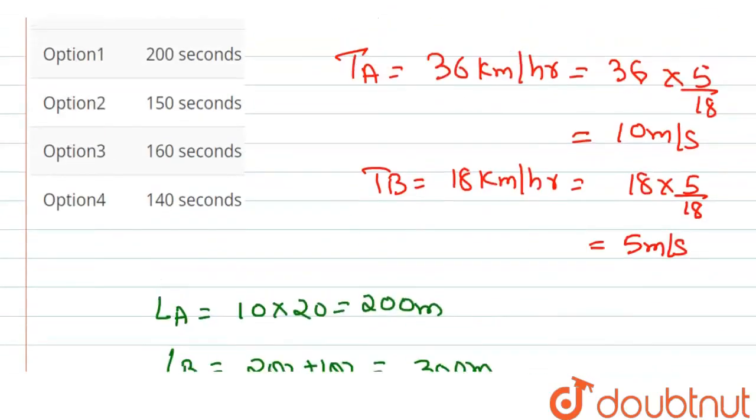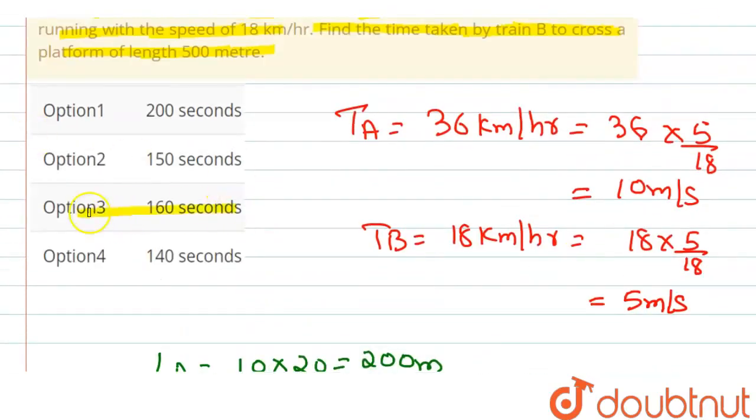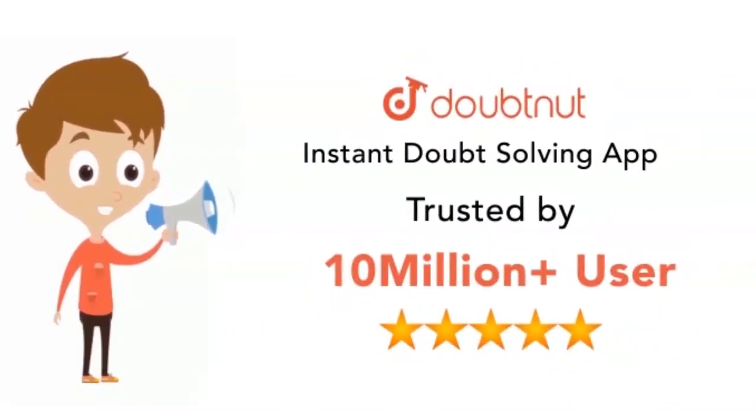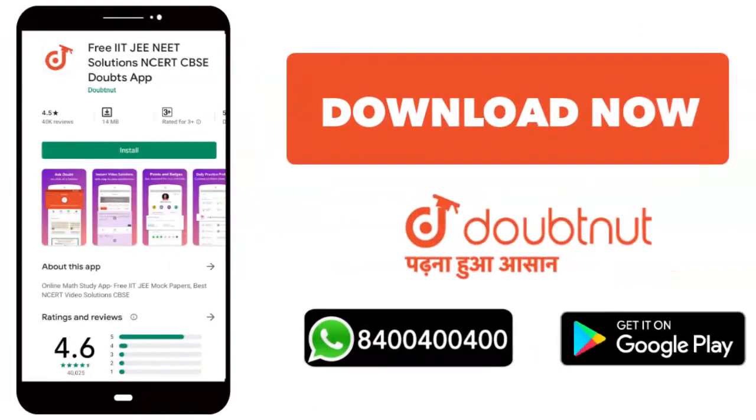Option number 3 will be the correct answer. I hope you like this video. For classes 6 to 12, up to NEET, IIT JEE mains and advanced level, with over 10 million students, download the Doubtnet app or WhatsApp your doubts to 8444400400.